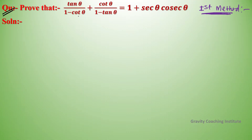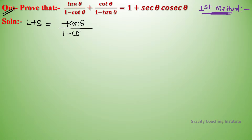Question: prove that tan theta divided by (1 minus cot theta) plus cot theta divided by (1 minus tan theta) equals 1 plus sec theta into cosec theta. So here LHS is equal to tan theta upon (1 minus cot theta) plus cot theta upon (1 minus tan theta).